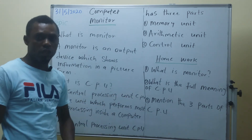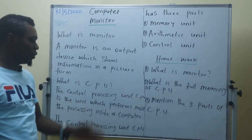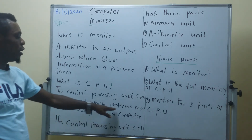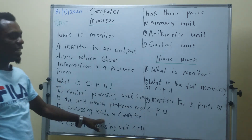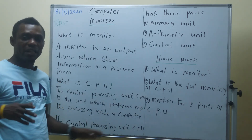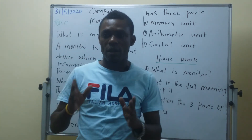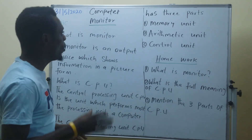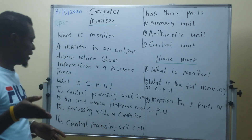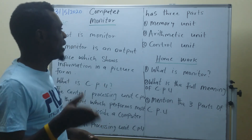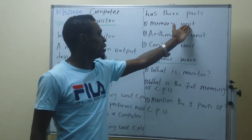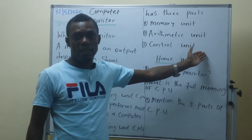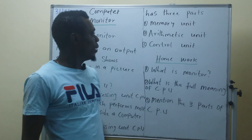The central processing unit is the unit which performs most of the processing inside a computer. It has a big role to play inside a computer — all the processing is from the CPU. This CPU is divided into three parts: the memory unit, the arithmetic unit, and the control unit.